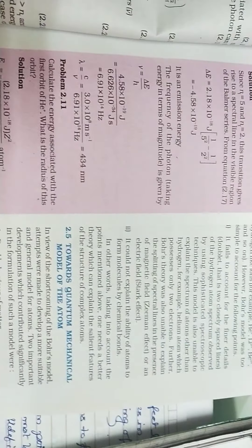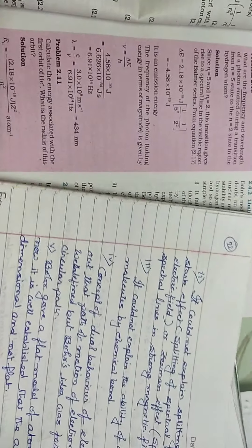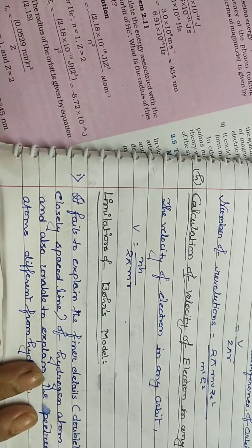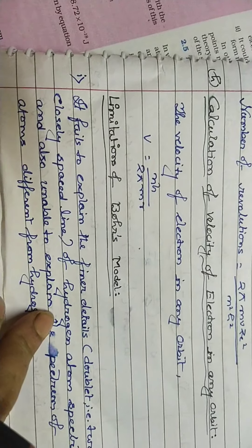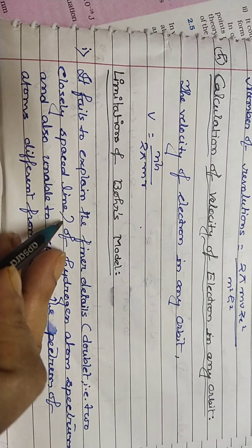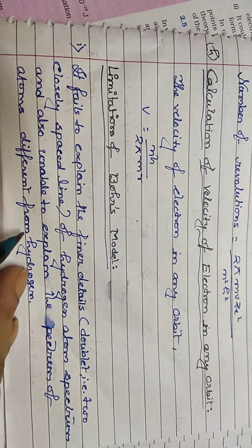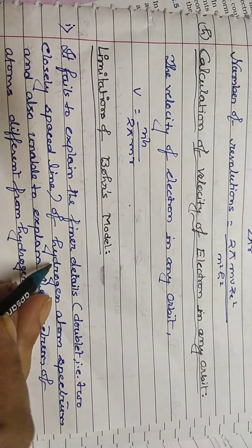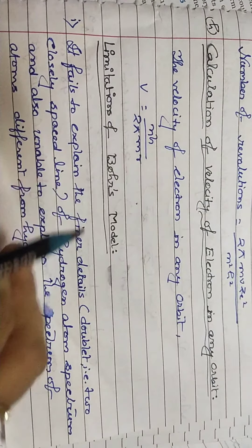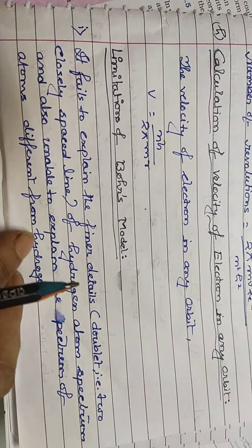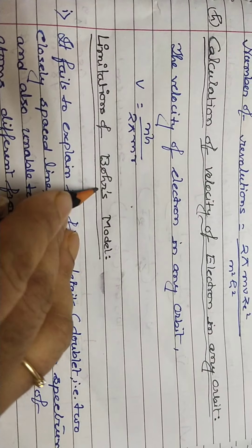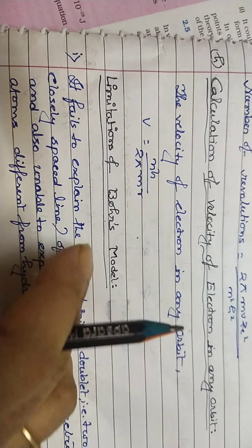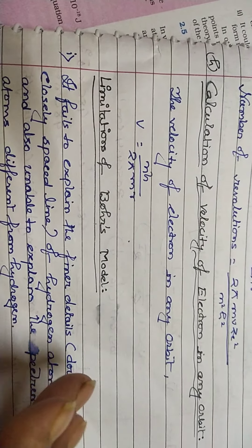Now we come to the limitations of Bohr's model. First limitation: it could not explain the fine details of the spectrum. The spectrum of hydrogen is explained, but where doublets appear — very close spectral lines — or the hydrogen atom spectrum involving multi-electron atoms cannot be explained. Bohr's model also cannot explain the spectrum of atoms other than hydrogen. Because of these failures, Bohr's model leads us toward the quantum mechanical model.